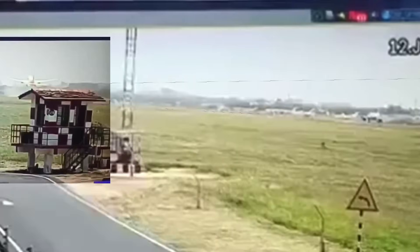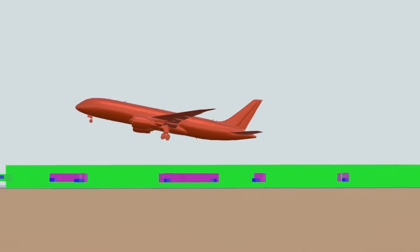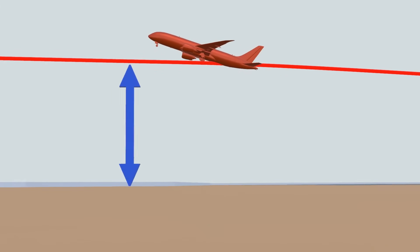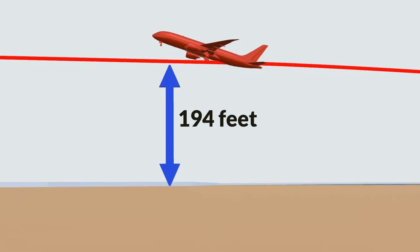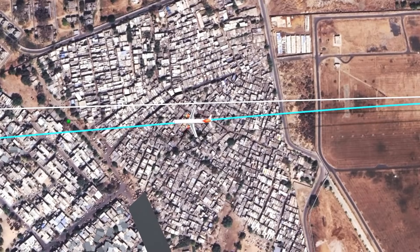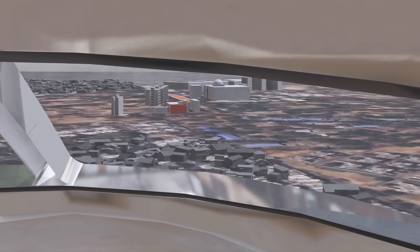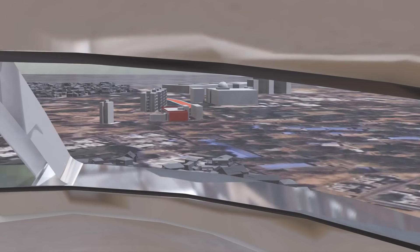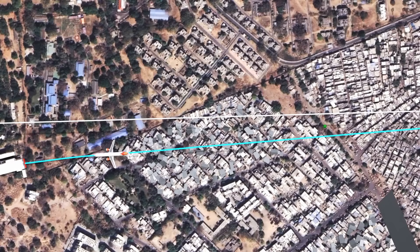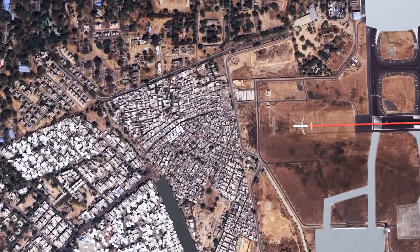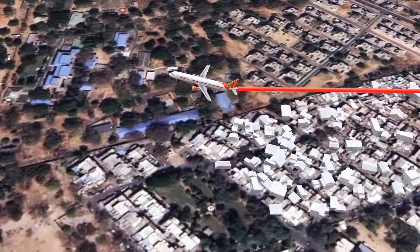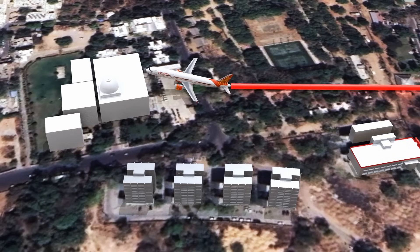Now let's observe it from the side view. The maximum altitude the airplane achieved was just 194 feet from the ground. Now observe the airplane's motion from the top view. Just before crossing the perimeter wall of the airport, the captain steered the airplane consistently towards the left. If the path of the airplane were straight, there is no scope of survival — that area is filled with trees and buildings.